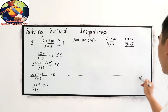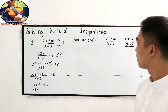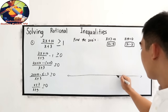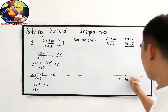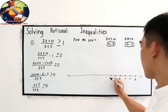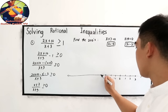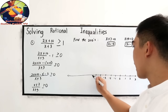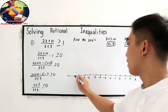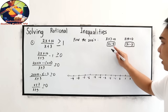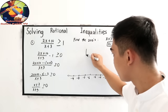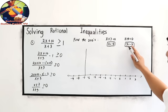Now we locate these zeros on our number line. We plot points from negative 9 through positive 3. We locate negative 7 here, and negative 3 here on the number line, dividing it into three regions.